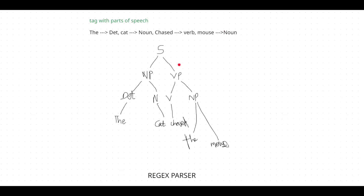Now let's draw the parse tree. Start with the S symbol. That sentence can be divided into noun phrase and verb phrase. The noun phrase can be further divided into determinant and noun, and the verb phrase into verb and noun phrase. The determinant is 'the', then 'cat', then the verb is 'chased', and you again divide the noun phrase into determinant and noun, tagging it with the words from the example.